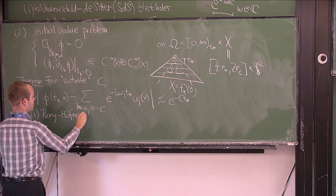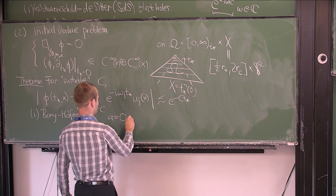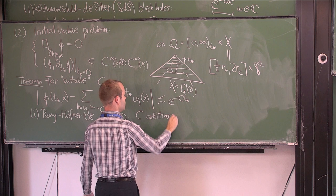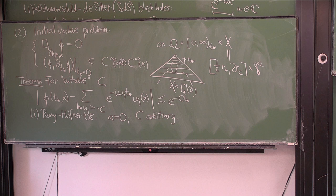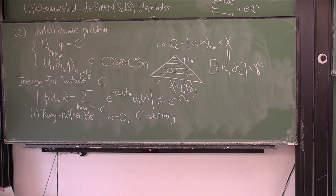The first result directly on this was proved by Bony and Häfner in 2008. They studied the case that the angular momentum A is equal to zero — that's the Schwarzschild-de Sitter case — and they proved this resonance expansion for arbitrary constant c, in supremum norm. It also holds for all derivatives in x, and you can differentiate term-wise in t* as well.